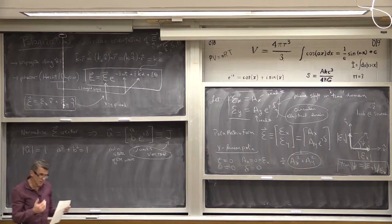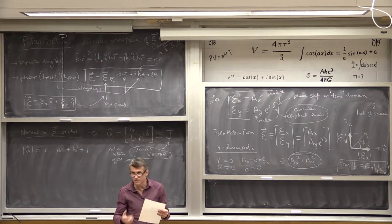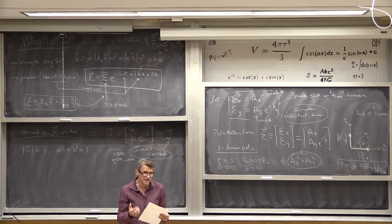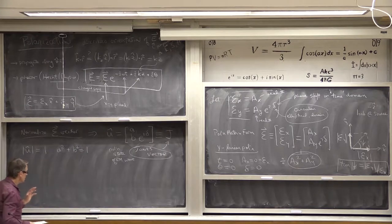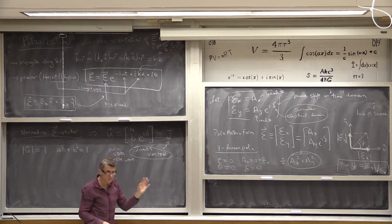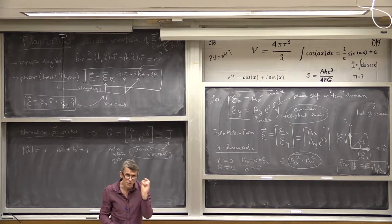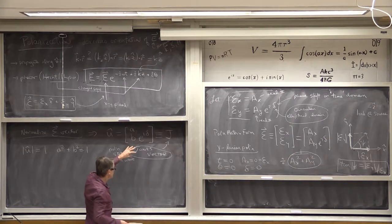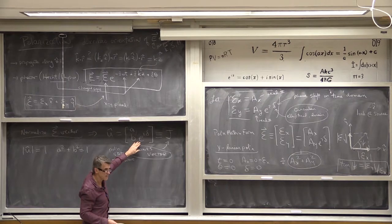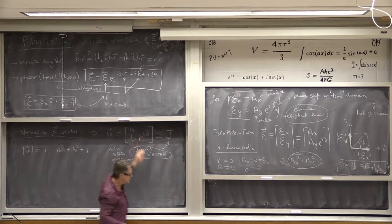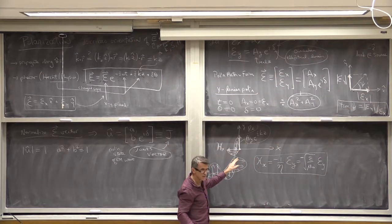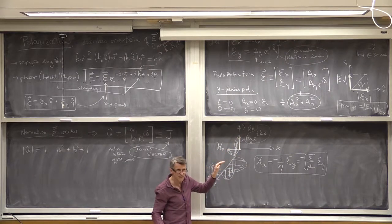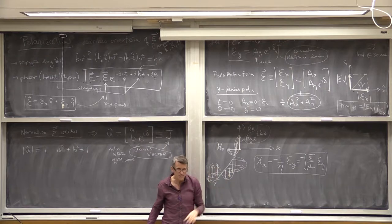We're now ready to assess the Jones vector for different states of polarization — we're going to start dancing again. When I see the Jones vector, A has no phase associated with it — it's a real quantity — and any phase delay is related to delta as before. What if I want to start the electric field at a different phase? What if I want to move the peak ahead half a wavelength?